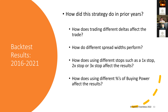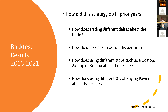What I wanted to answer with this backtest was: how does trading different deltas affect the trade? How do different spread widths perform? And how does using different stops — such as a one-time stop, two-time stop, or three-time stop — affect the results? These are questions I get asked a lot.